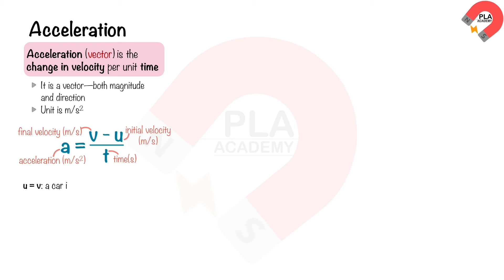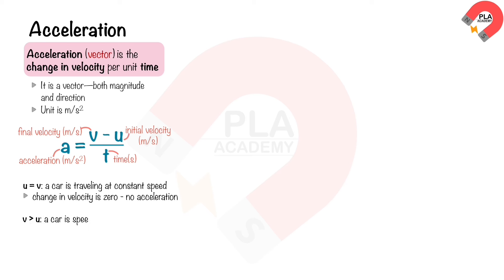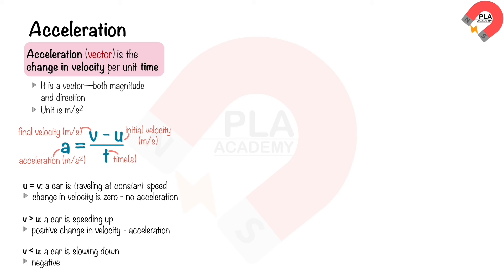When u equals v, it indicates the car is traveling at constant speed; the change in speed is zero and the acceleration is also zero. When v is greater than u, it indicates the car is speeding up — this positive change in velocity is called acceleration. When v is less than u, it indicates the car is slowing down — this negative change in velocity is called deceleration.